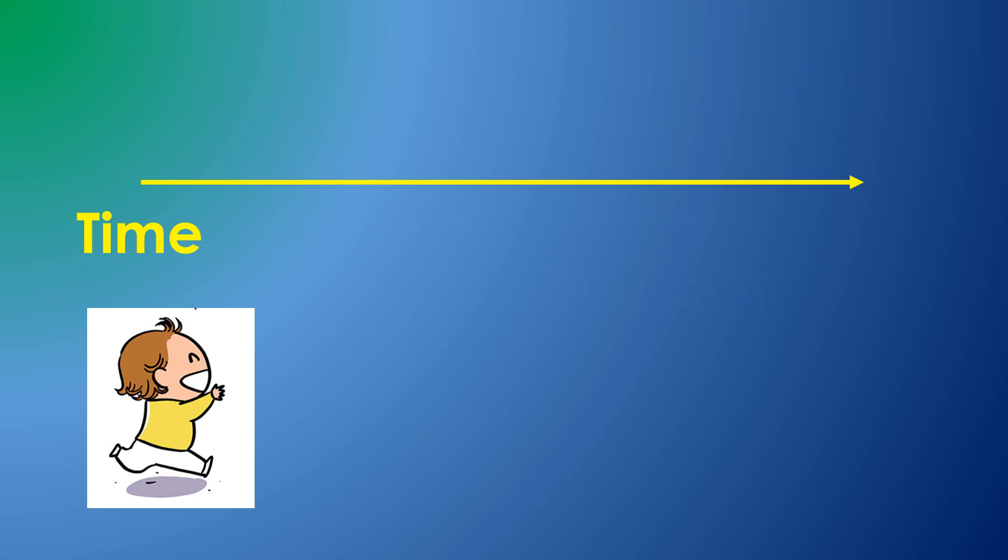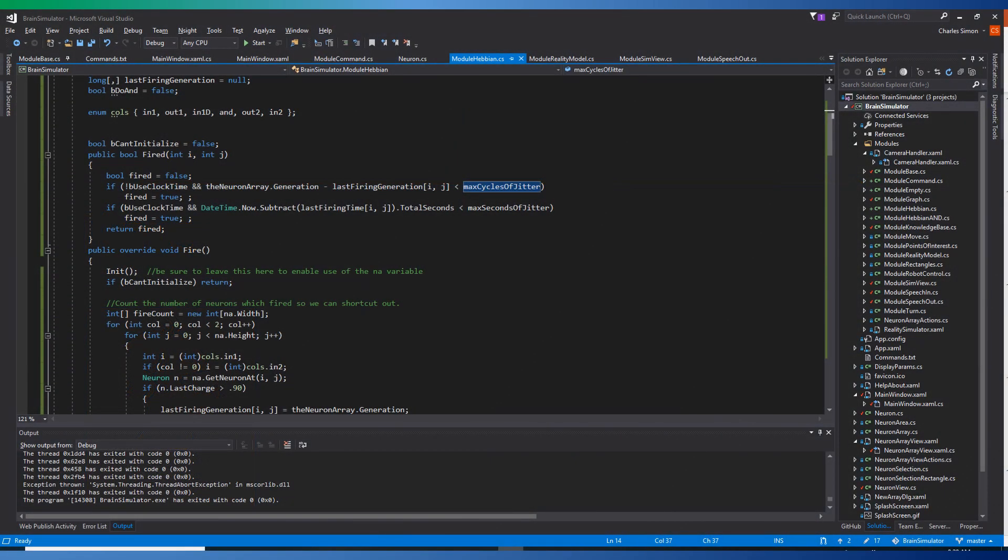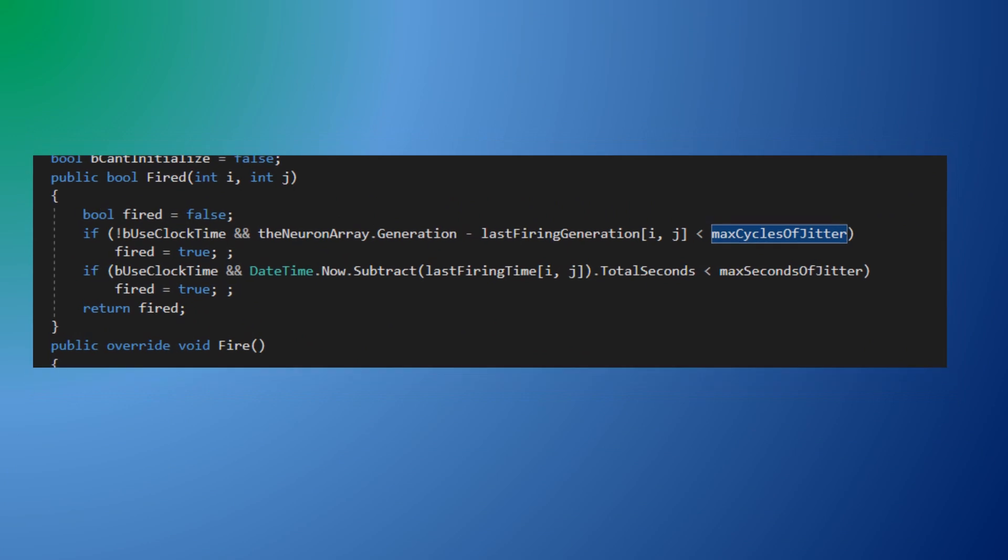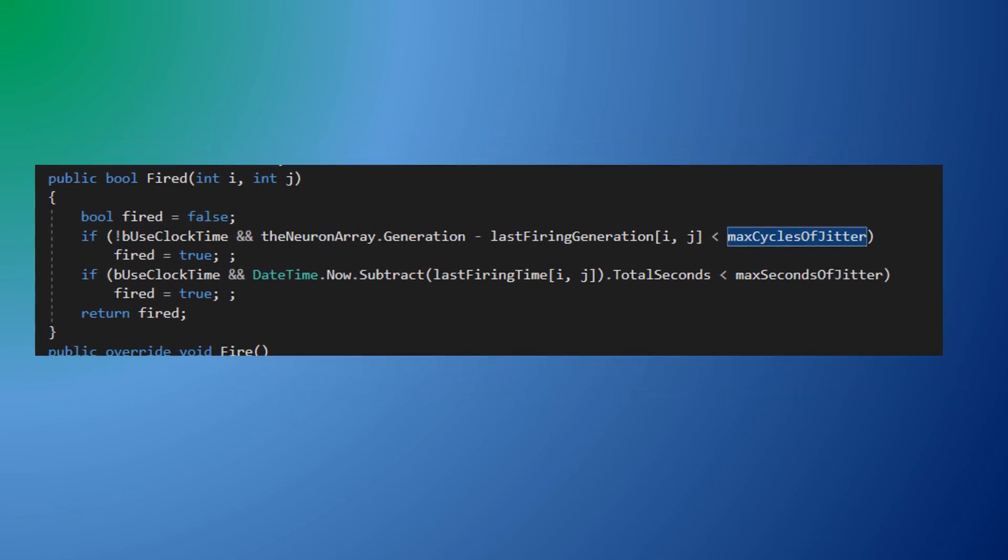In the real world you may be shown an object and not hear the associated word for several seconds. To address this I have added an array which records the last time each relevant neuron spiked either in neuron engine cycles or in wall clock time. Now when asking if a neuron fired rather than considering its instantaneous spiking state a neuron is considered to have fired if it has spiked within the past n cycles or the past n seconds.